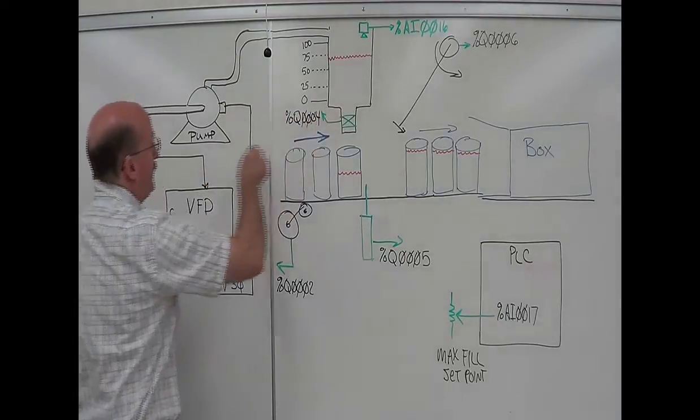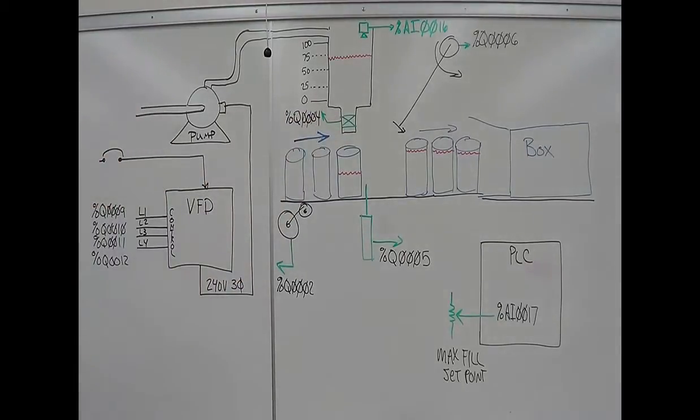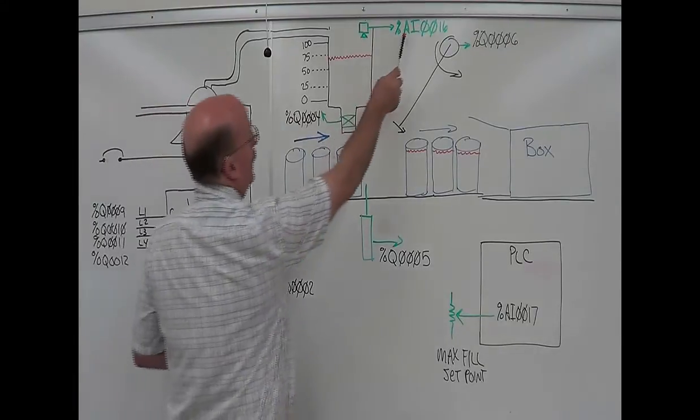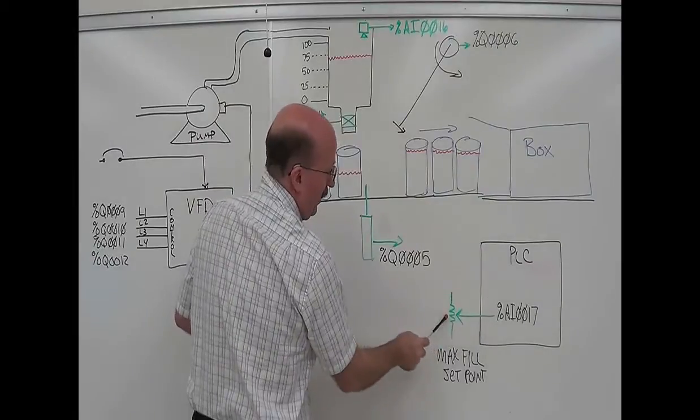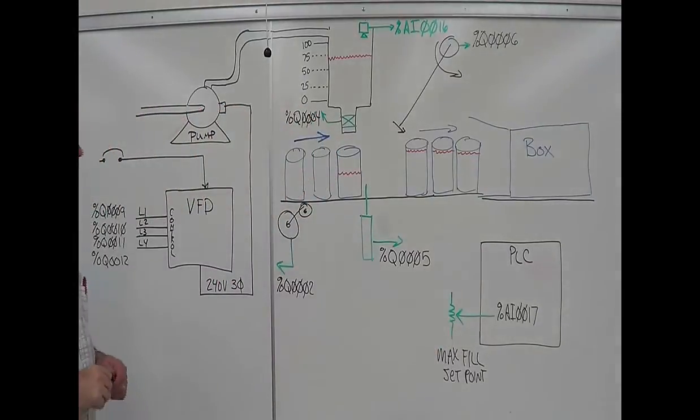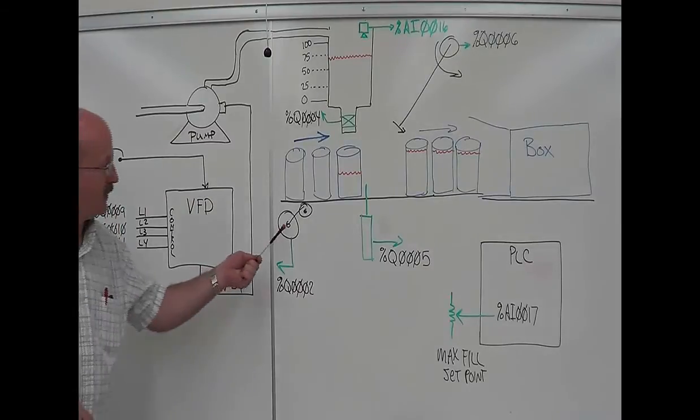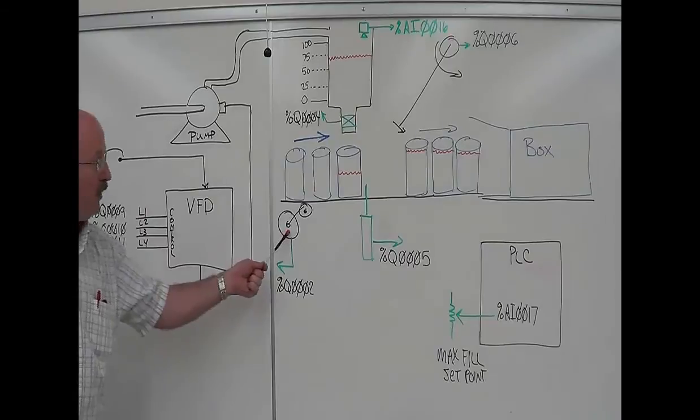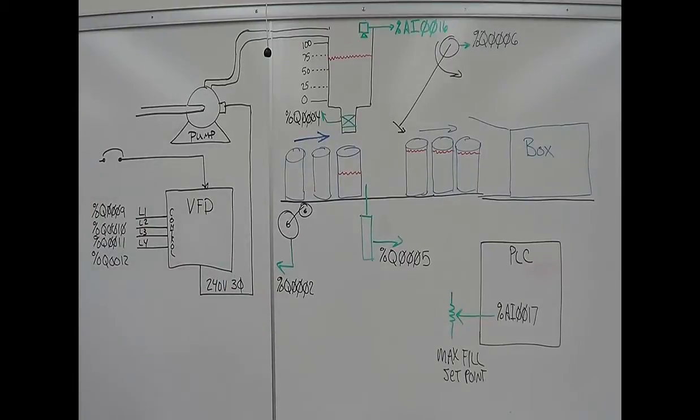So this process here for controlling this drive, you can set that up on one part of your ladder diagram. You've got your analog input you're reading there, your analog set point you're reading there, and then your four outputs to your pump motor. You're also looking at the conveyor. The pump does not run unless the conveyor is running. So the conveyor starts everything.